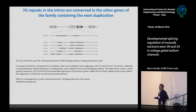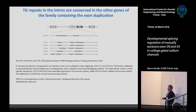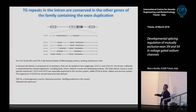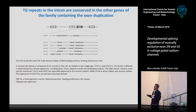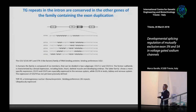CELF proteins comprise two subgroups: CELF1 to 2, which are ubiquitously expressed, and CELF3 to 6, which are specifically expressed in the nervous system. Our idea was that these TG repeats either side of the branch point were binding one of these two proteins, masking the branch point, resulting in exclusion of 5A and inclusion of 5N — which is what we observed in the mini-gene system.